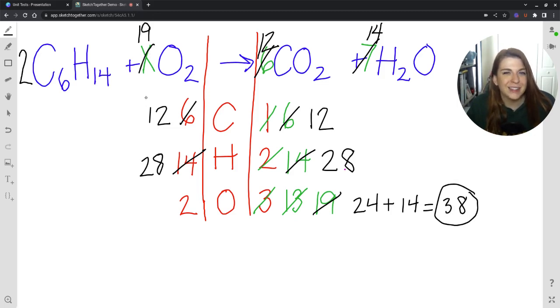And 38 divided by 2 is what this x coefficient needs to be, which, believe it or not, is 19. 19 times 2 would give me the 38. And there you have it.